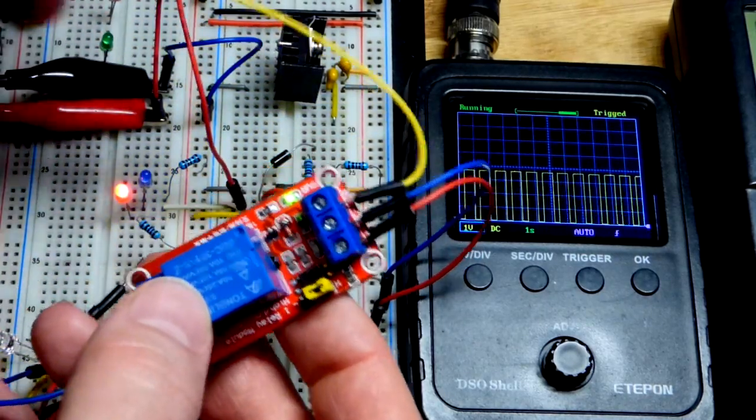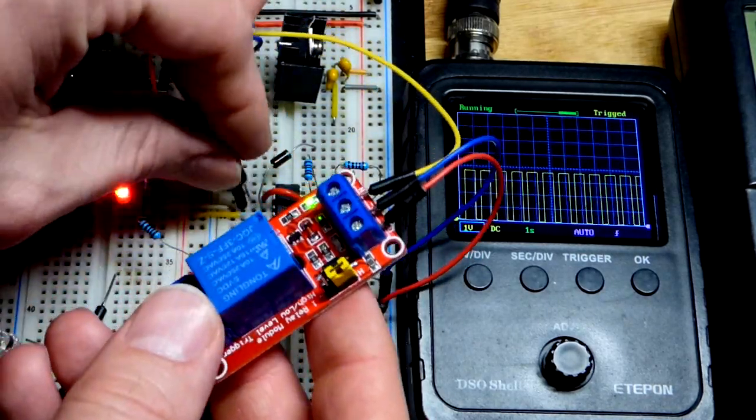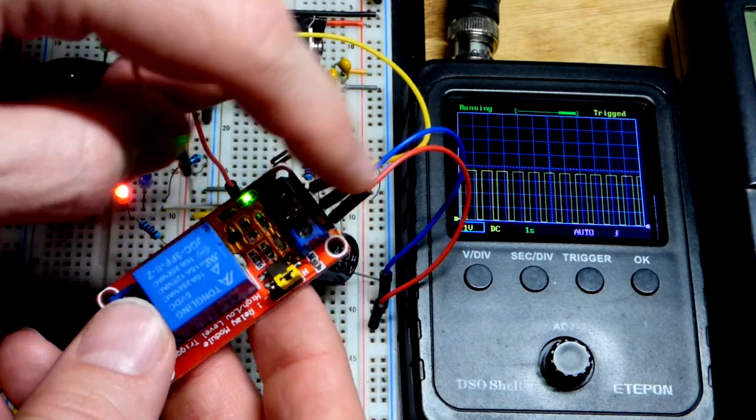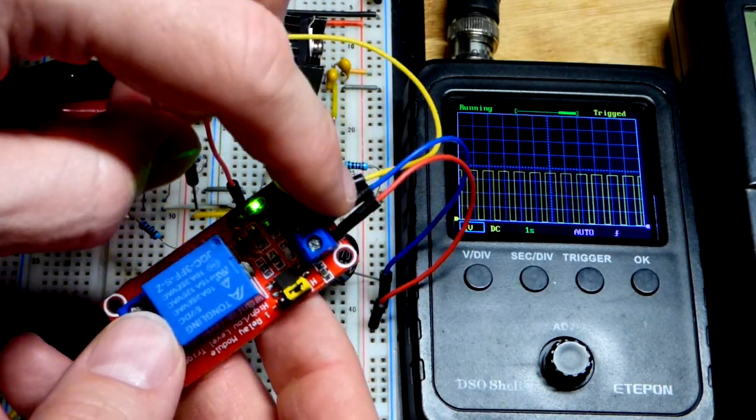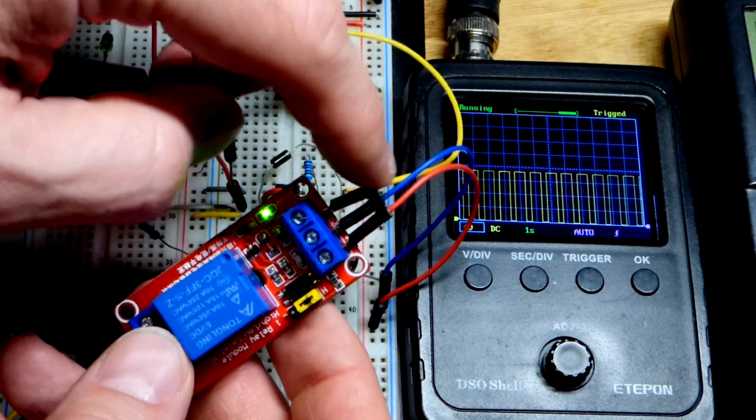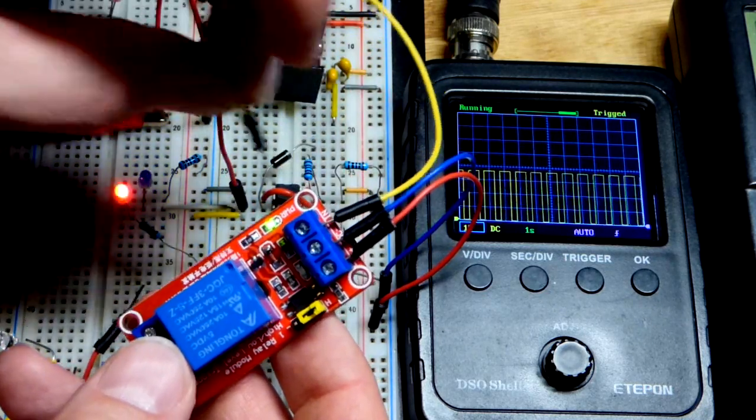So we will now plug the relay input. So that's V plus where the red jumper is and V minus where the blue jumper is. They're marked down there. And then we have our input right there.